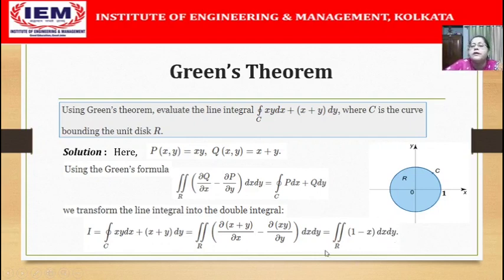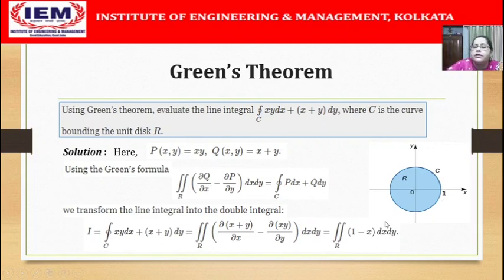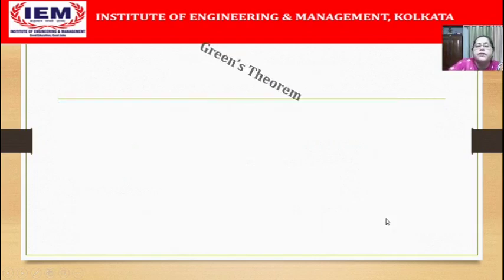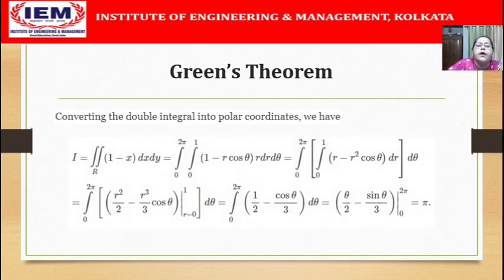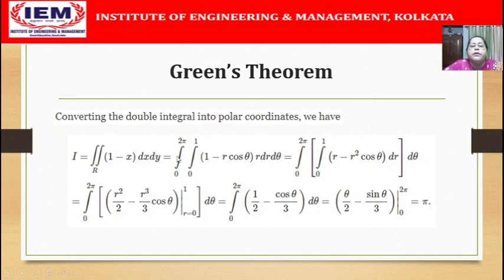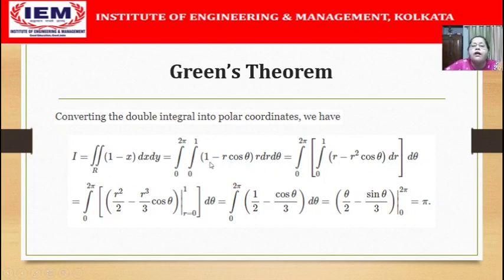The next task is to evaluate this double integral. Since the region of integration R is a circular region, it is advantageous to transform to polar coordinates. Converting, the double integral of (1 minus x) dx dy over R becomes an integral where x is r cos θ, and dx dy is replaced by r dr dθ. Because our region is a circle of radius 1, r varies from 0 to 1 and θ from 0 to 2π.